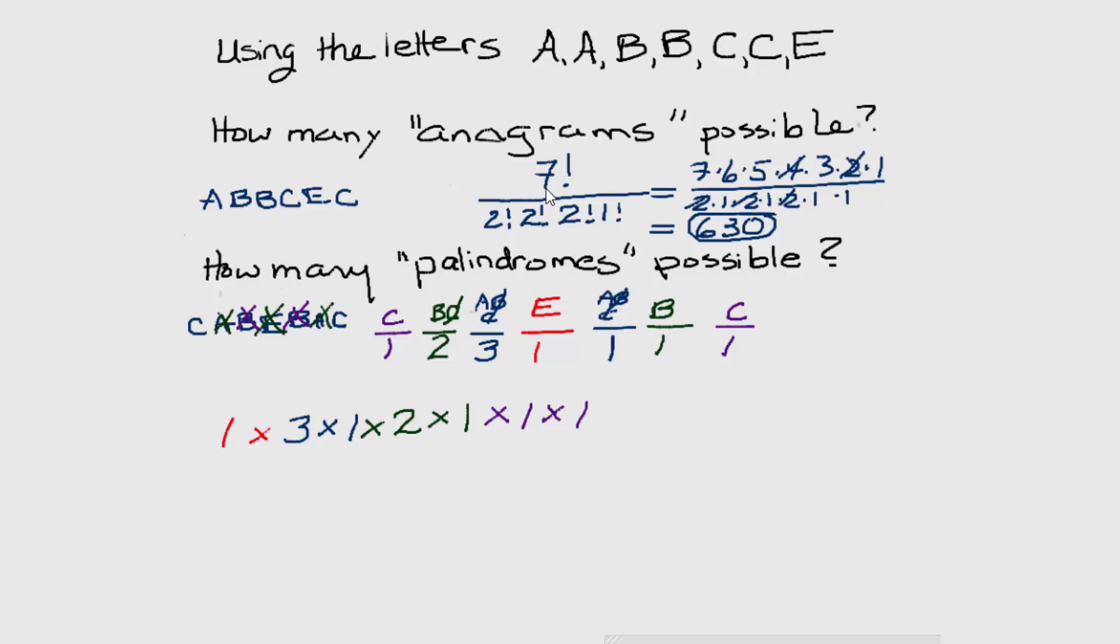So we multiply these together and the result is that there are only six possible palindromes made from these seven letters.